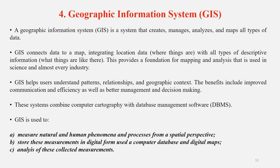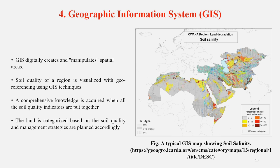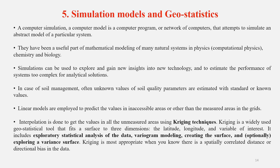GIS — discussed in great detail in earlier lectures — has different uses for soil management. GIS helps in presenting and representing various information through thematic layers. For example, a map showing soil salinity provides comprehensive knowledge about soil quality and different indicators. This helps policy makers and experts understand where and how much soil problems exist, and that is how it helps in managing soil.